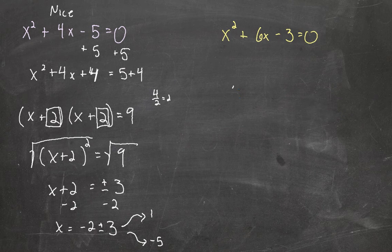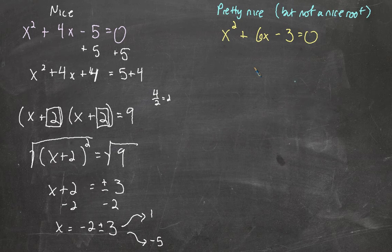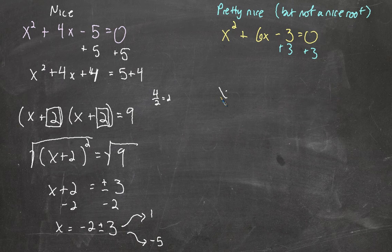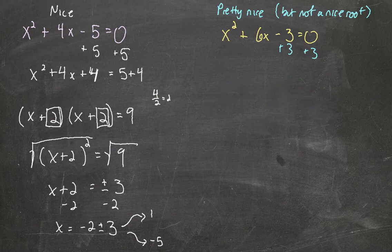Next one. This one's going to come out pretty nice, but it's not going to have a nice square root — it's going to be the square root of some number. We get rid of the constant by adding 3 to both sides. I also want to show you how you could think of this differently: with x squared plus 4x minus 5 equals 0, I know this number should be 4, so to get from negative 5 to 4 I would add 9 to both sides — and of course it comes out the same.